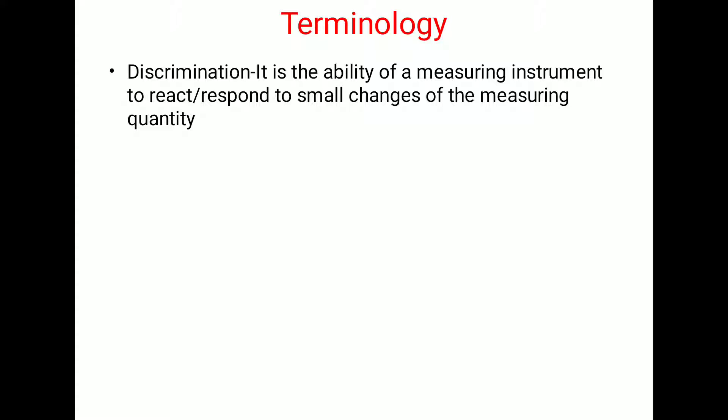The last terminology is discrimination — the ability of a measuring instrument to react or respond to small changes in the measured quantity. If the measuring quantity changes by very small amounts, a good instrument should respond well to such changes. If the instrument responds well, it has good discrimination; if it responds slowly or not at all, it has less discrimination.